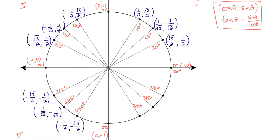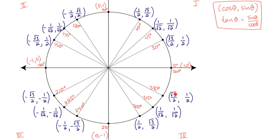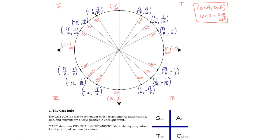For quadrant 4, we find the coordinates for the last three angles. We're on the positive side of the x-axis, so x stays positive. But we're on the negative side of the y-axis, so all y-coordinates are negative. That's our unit circle, and you'll need to become familiar with it to solve trig ratios for angles between 0° and 360°.